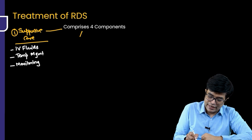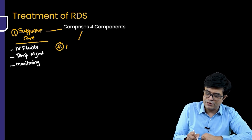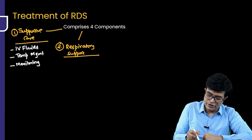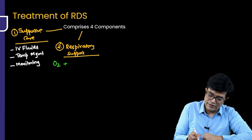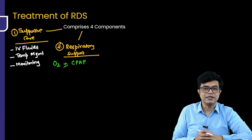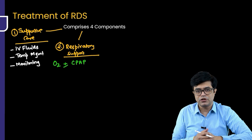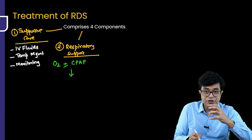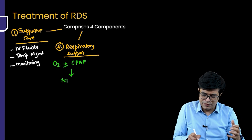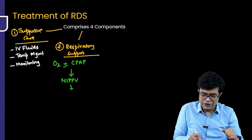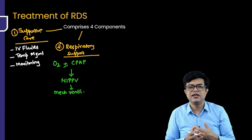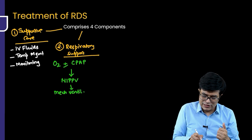The second component is respiratory support. The initial therapy is humidified oxygen along with CPAP. In the vast majority of patients the response to oxygen alone is suboptimal, so CPAP generally needs to be started. If the patient is not improving, stepwise escalation continues: CPAP → NIPPV → intubation with mechanical ventilation. During mechanical ventilation, we initially use conventional ventilation in SIMV mode, then can shift to HFOV mode. If all else fails and it is available, ECMO can be considered, though these patients have a very poor outcome.